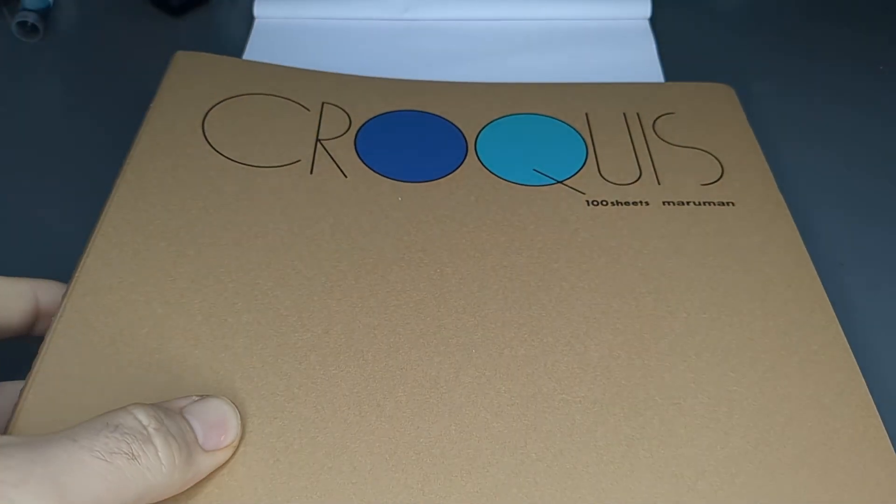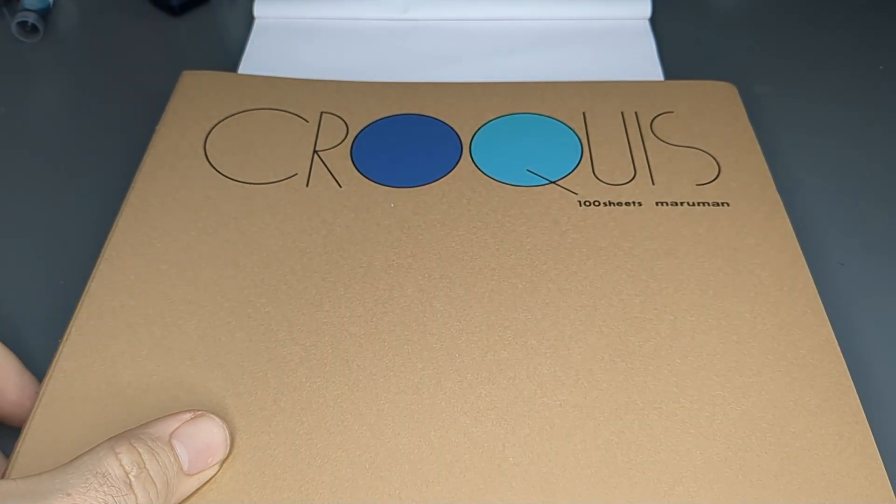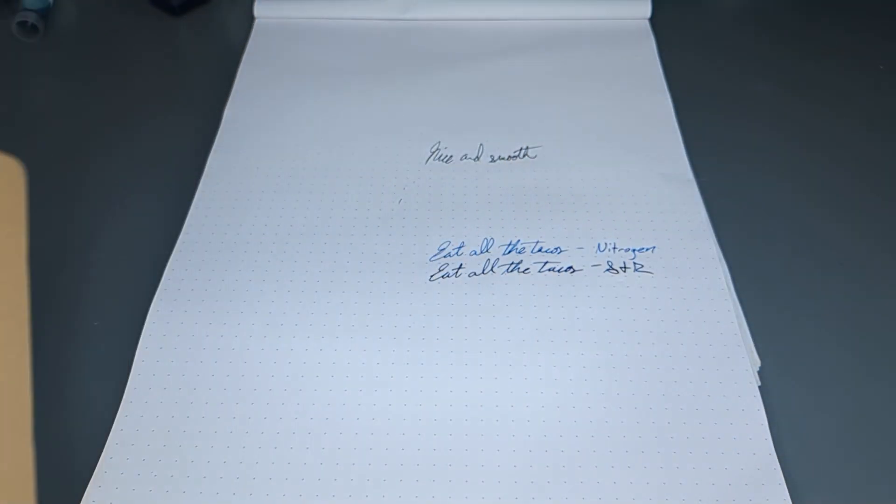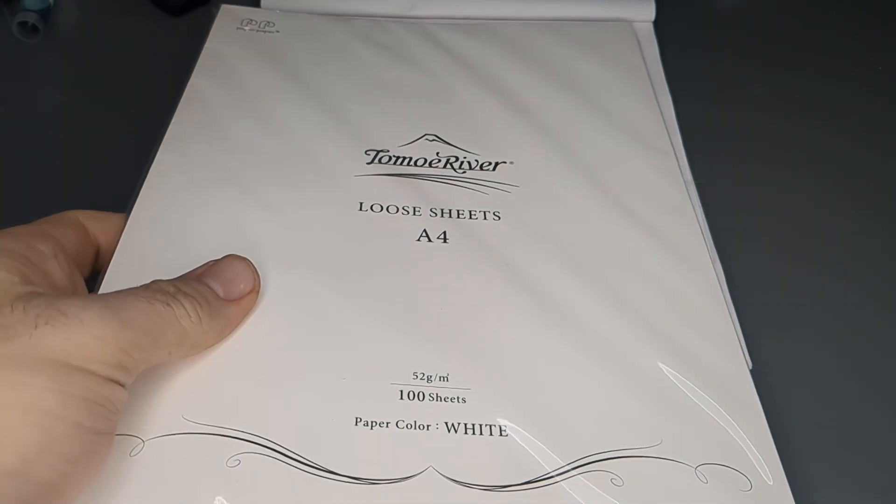Starting off with our most budget option, I have some just regular copy paper. This isn't the heavyweight laser jet paper that I recommend sometimes, this is just the super cheap copy paper. And then our baseline for fountain pen friendly paper would be the Rhodia Dot Pad, and our papers that should give us better performance. We have the Morrow Man Crocus, which I picked from a number of different lists I found online for alternatives to our final option, which of course is the Tomoe River paper.